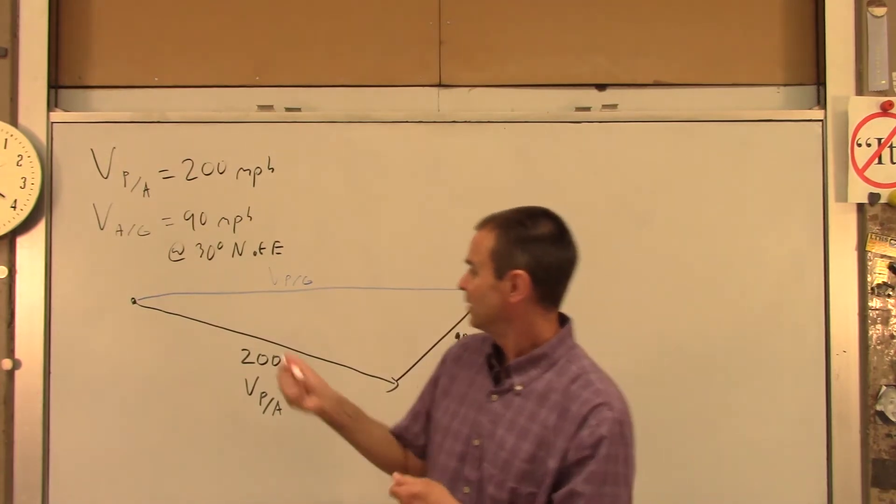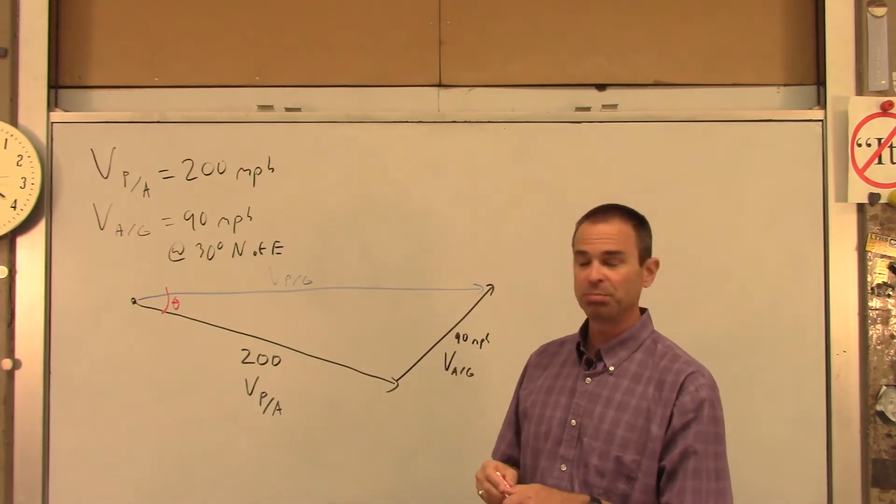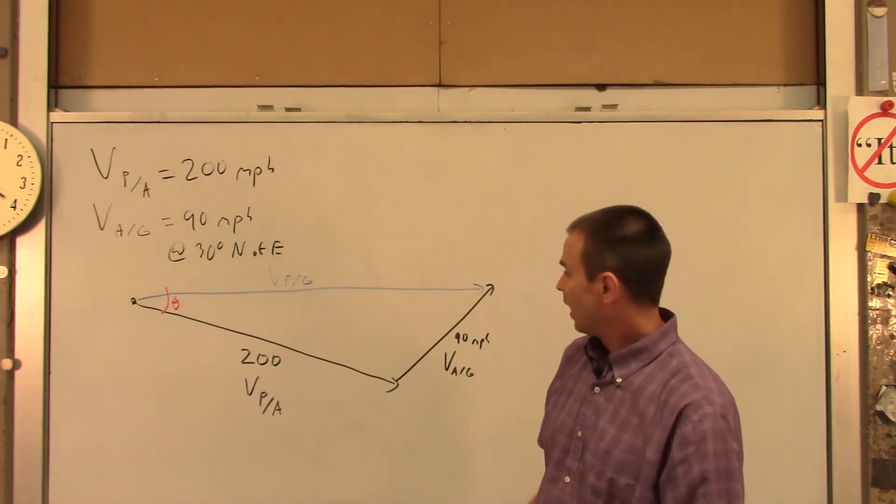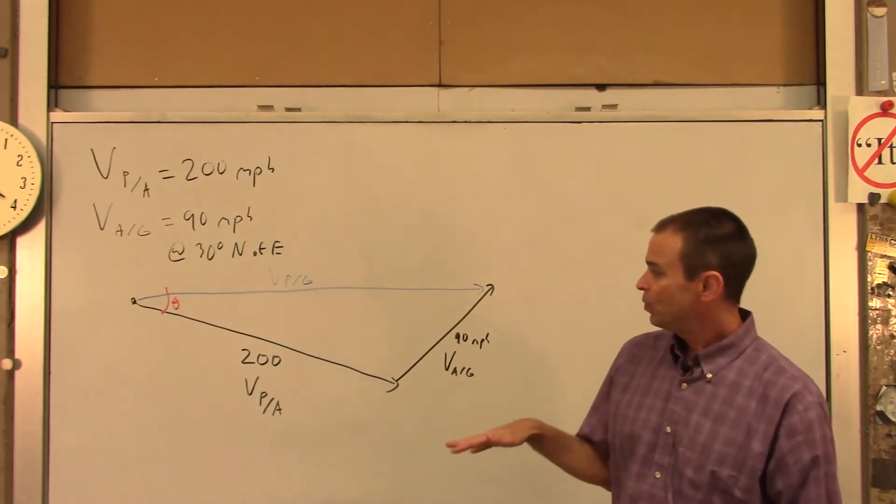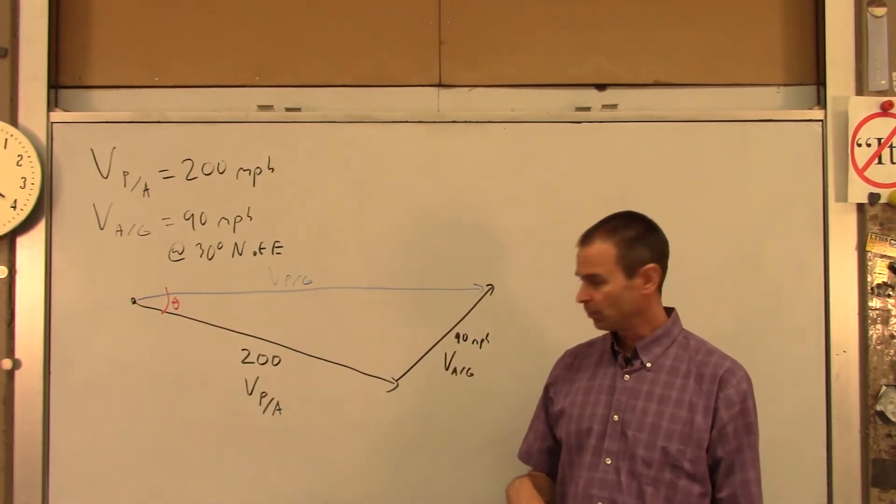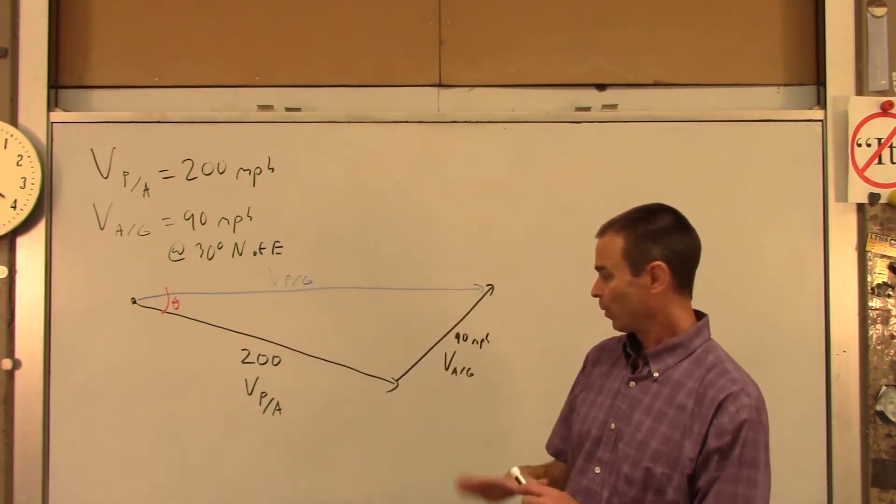All right, so the angle we need to find is this one right here. Which way does that pilot have to point his plane such that the plane will actually scoot due east. What we're going to end up doing is breaking this down, this larger triangle, into a couple of smaller ones. A quick note, by the way, this is not a right angle. So we're going to break this thing down. We're going to have two right triangles.